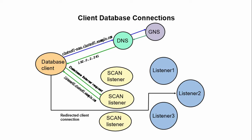When resolving the address listed in the connect string, the DNS will forward the resolution request to the GNS with the scan VIP address for the chosen scan listener and the name of the database service that is desired.